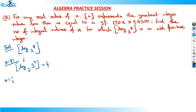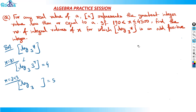Similarly, if x = 243, which is 3 raised to 5, then log of 243 base 3 = 5. So 5 would be the answer for that value.